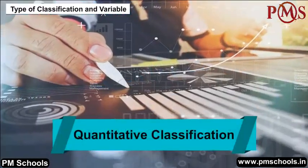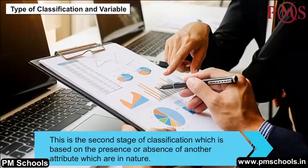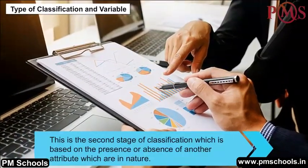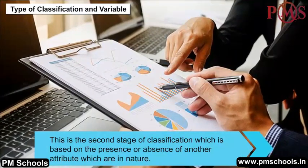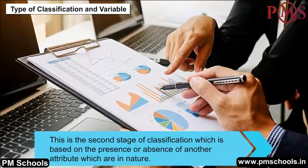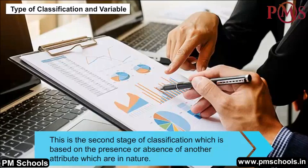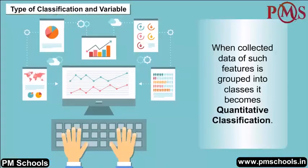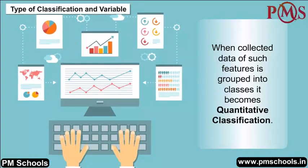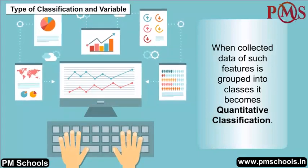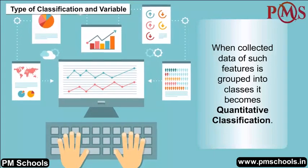Quantitative classification: This is the second stage of classification, which is based on the presence or absence of another attribute which are quantitative in nature. When collected data of such features is grouped into classes, it becomes quantitative classification.